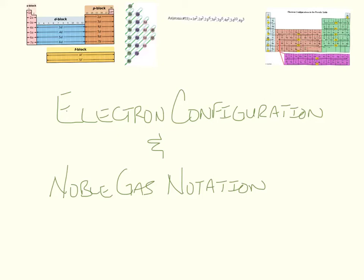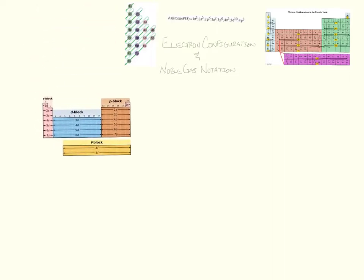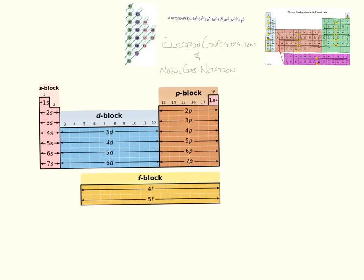This is a short video on Pre-AP Essential Skill Number 2, electron configuration and noble gas notation. Some of you have already covered this in general chemistry in some of the last units, so we're going to briefly cover it and hopefully remind you of how this needs to be done. You'll have to write some of these on the test.